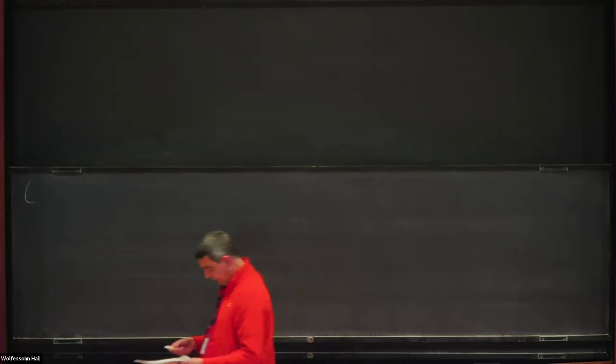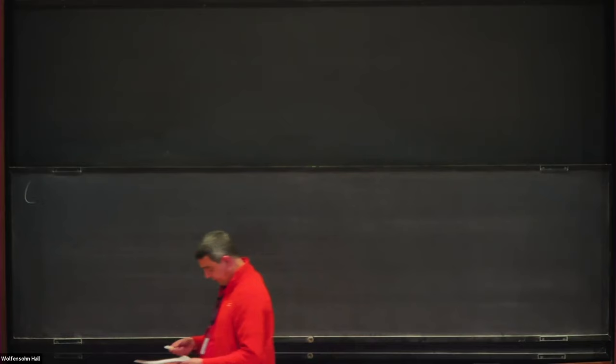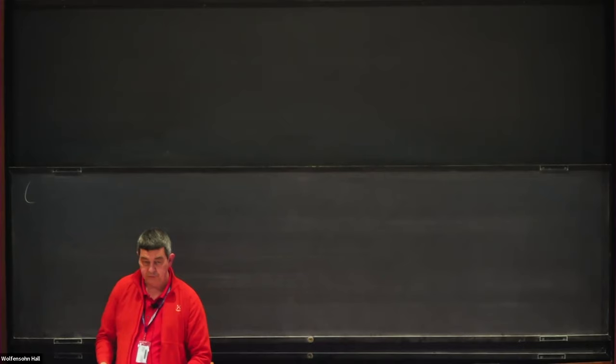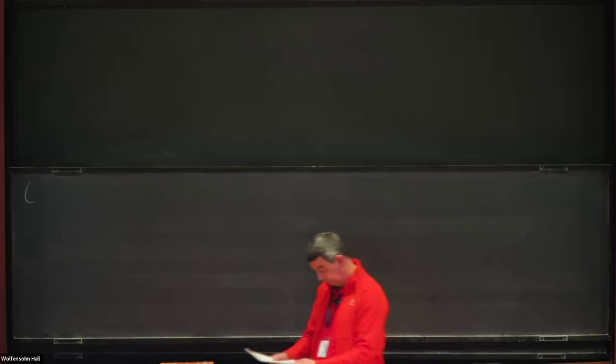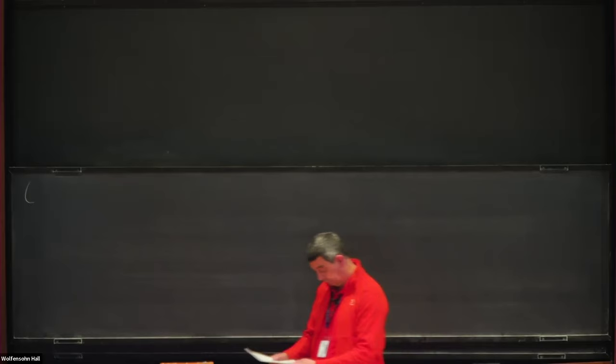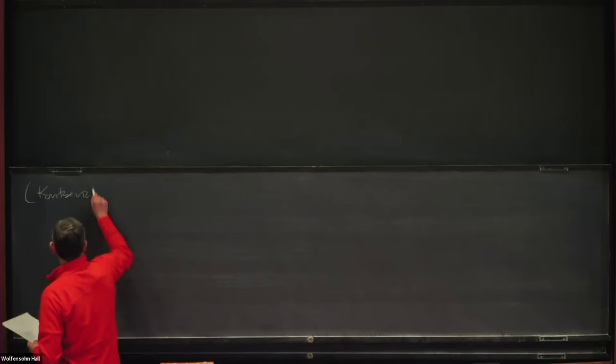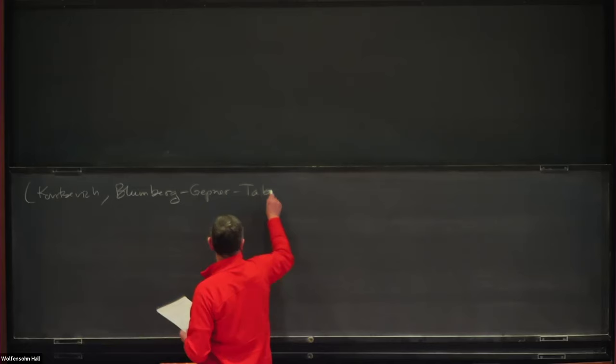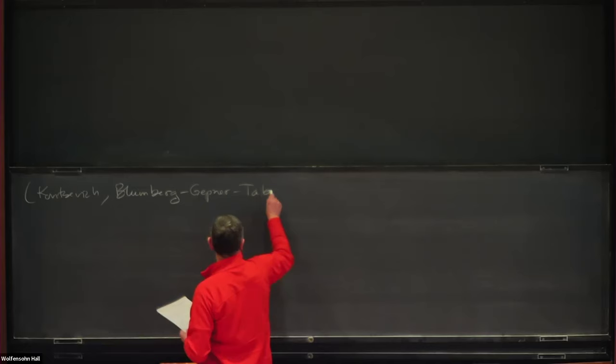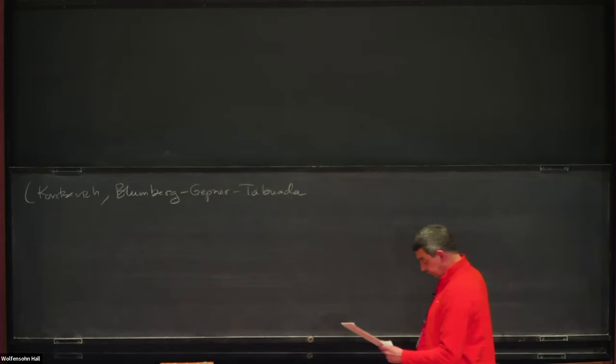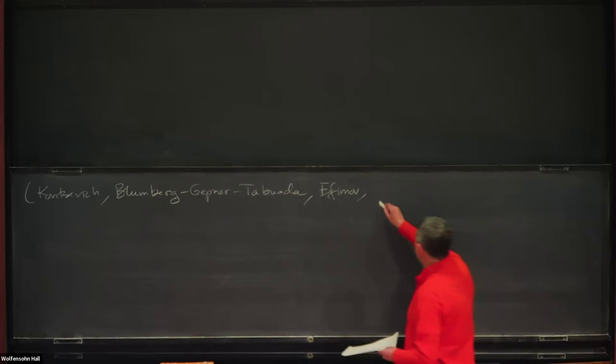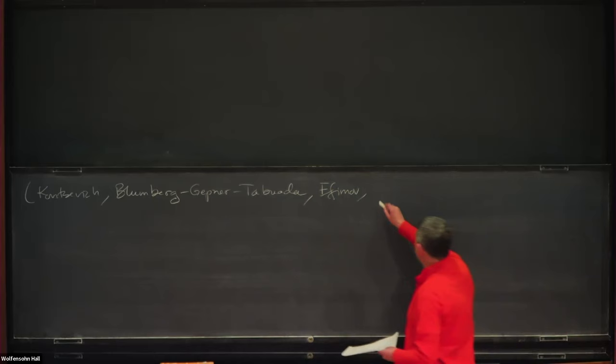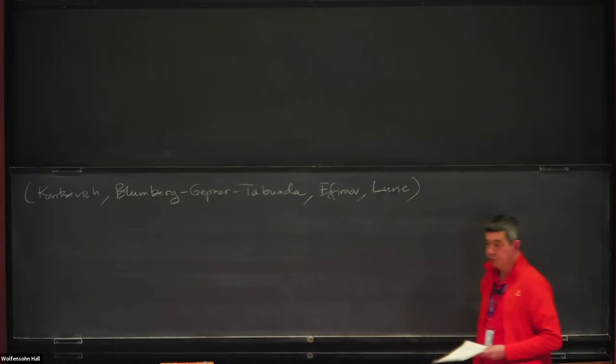So let me now explain what localizing invariants are. And I think this goes back to, or this idea of non-commutative motives, goes back to the talk that the contributes gave here for the Lynn's 61st birthday. So then Blomberg-Gebner and Tavuata has produced this properly. And Ifimov has found a much better way of doing this. And all of this would not be possible without Lurie's great gift to humanity.